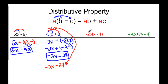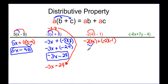Let's try the next one. We're thinking negative two times four X, plus negative two times negative one. Doing the work: negative two times four X would be negative eight X. And negative two times negative one — remember, negative times a negative is a positive — so it would be positive two. And we'd be done at that point.